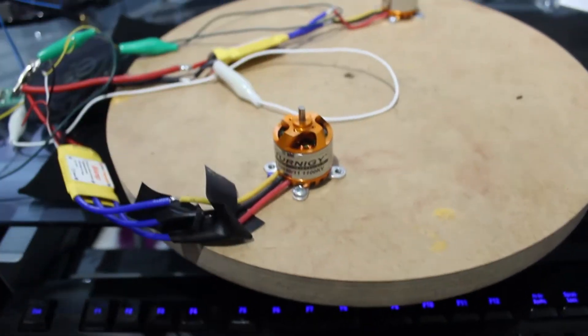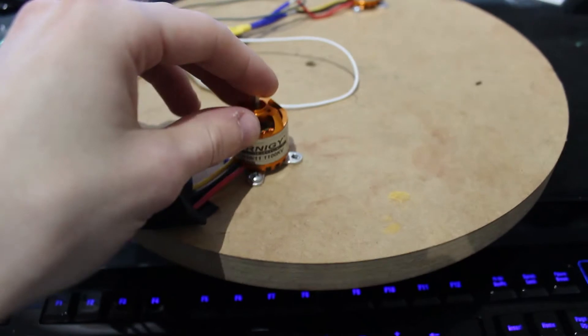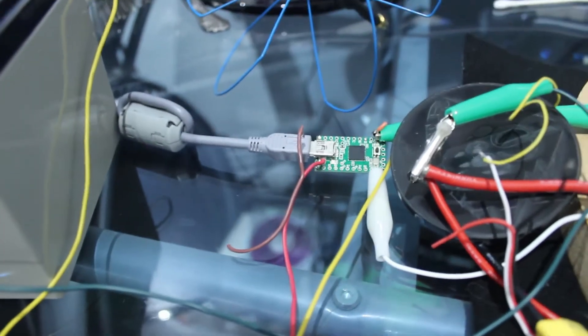These are Turnigy 1100 kV which is actually 1000 kV because they're mislabeled. Powered off 12 volt battery, an Arduino.